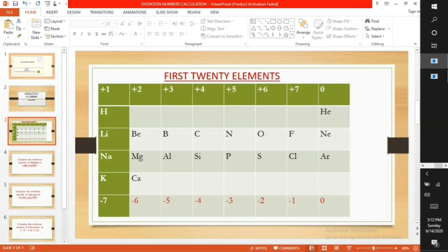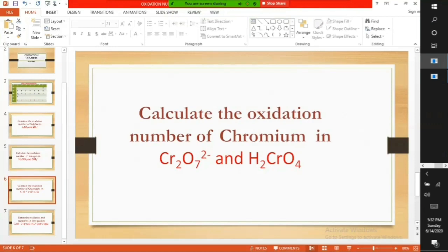Now let's take specific examples to show this. Calculate the oxidation number of chromium in dichromic ions and chromic acid.